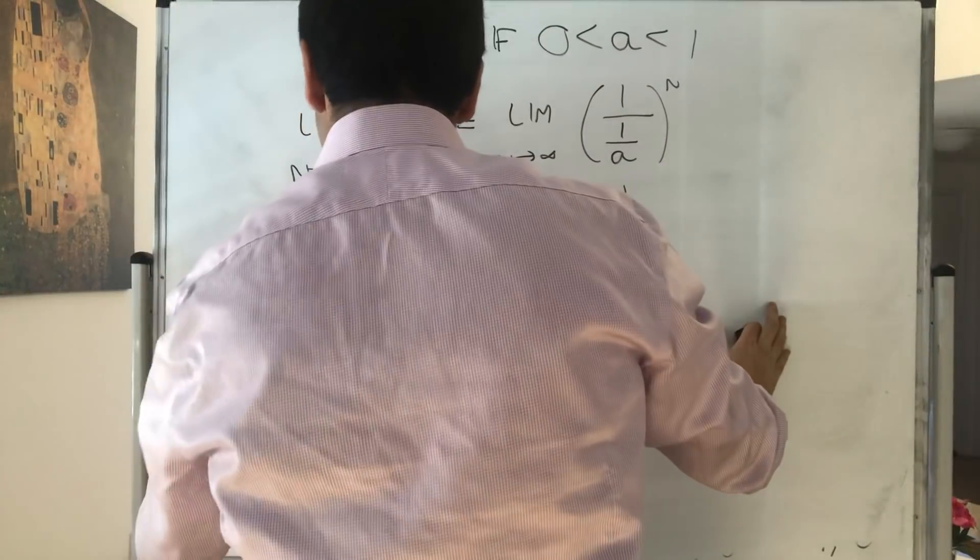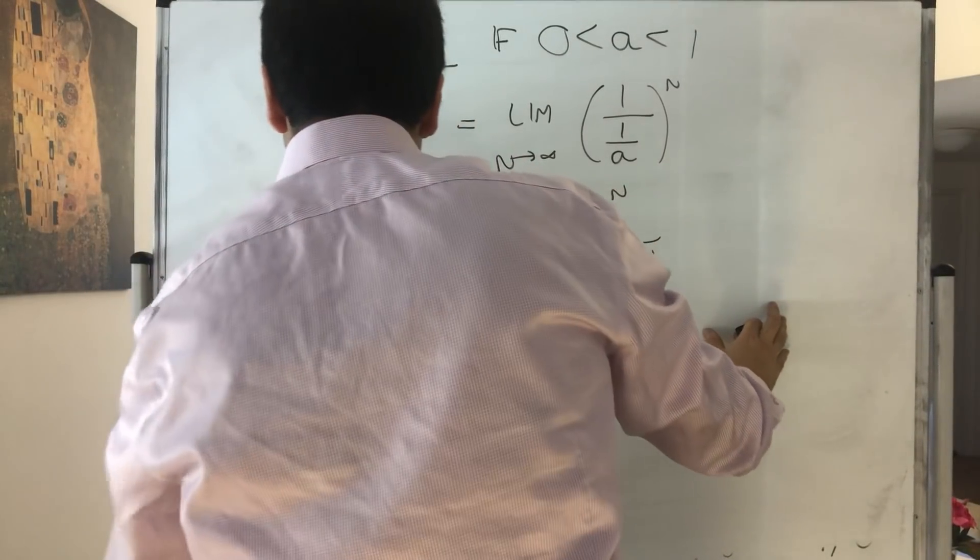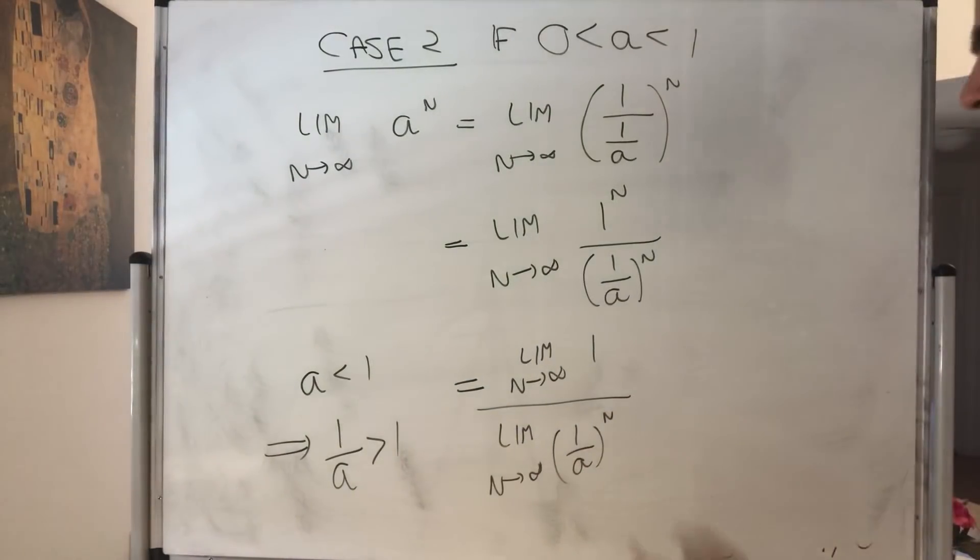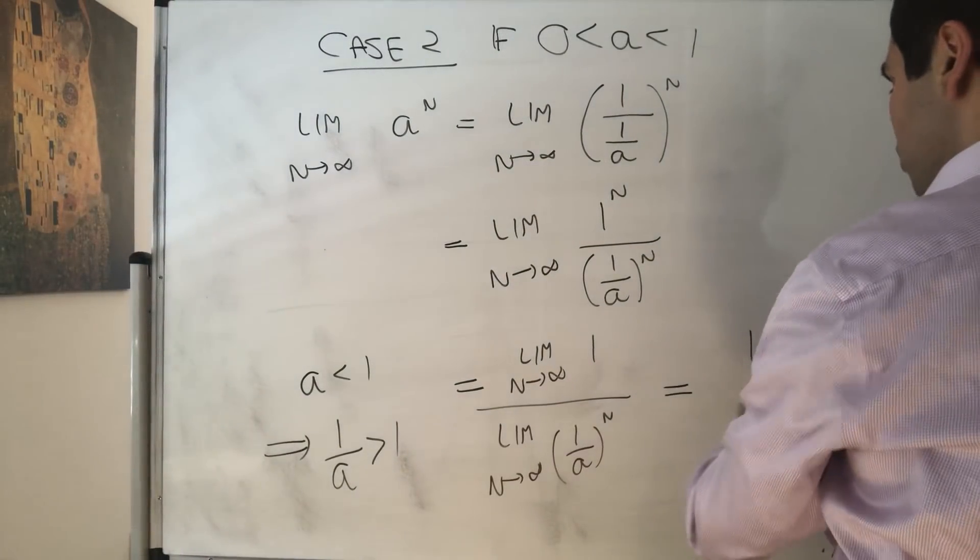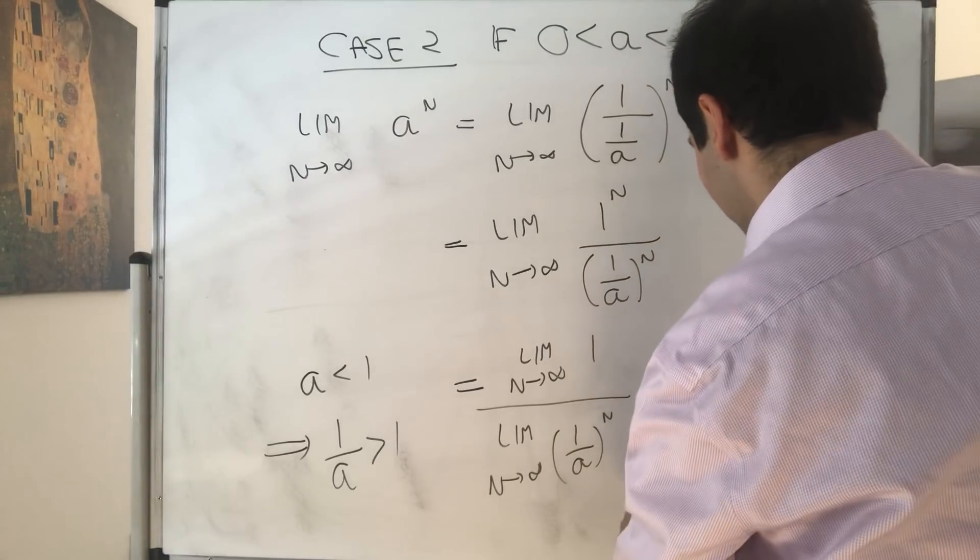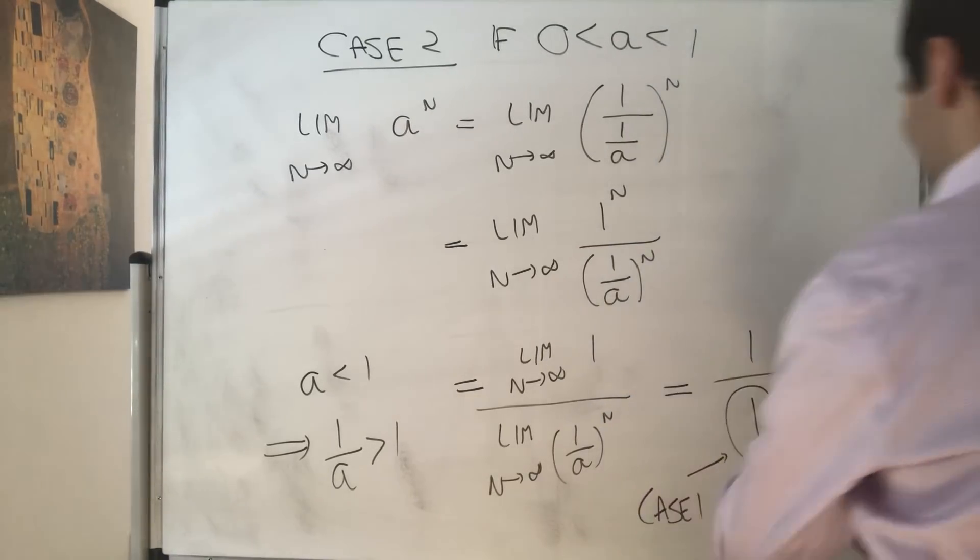But here's the thing. If a is less than 1, then 1 over a is greater than 1. So then by case 1, we get that this becomes 1 over 1. That was case 1. And that becomes 1.